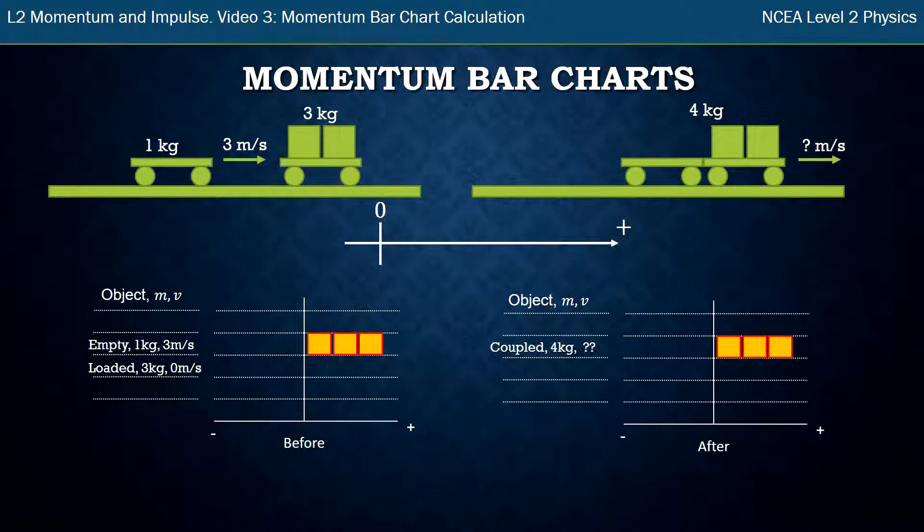After all the work we did in video two we had something that looked like this. The empty carriage to start with had three momentum units and then we know that through conservation of momentum, which is the idea that the total momentum before equals the total momentum afterwards, our coupled carriages had to have three momentums as well.